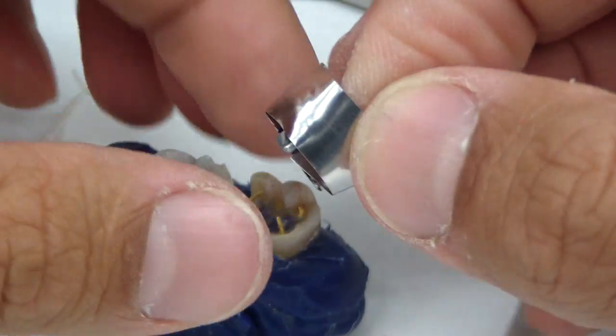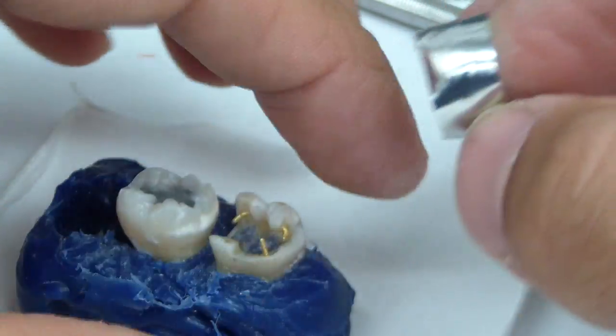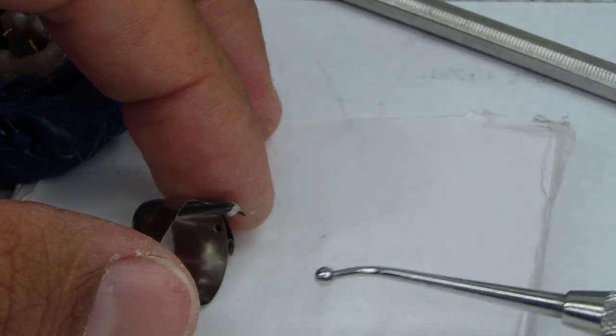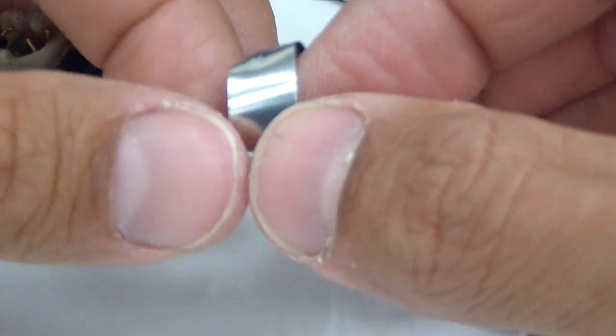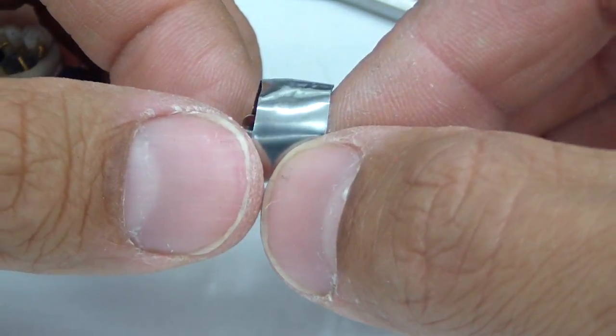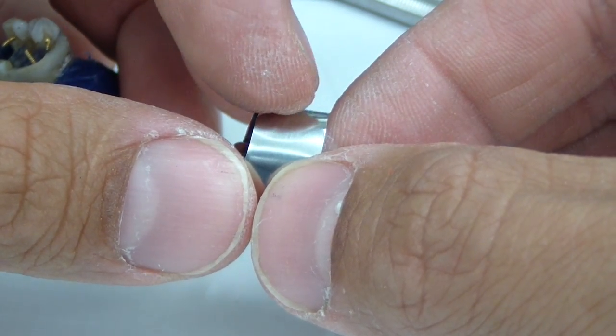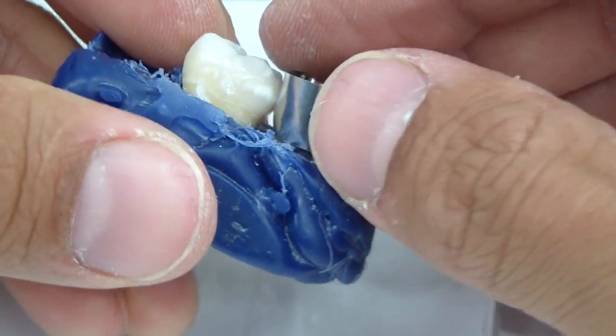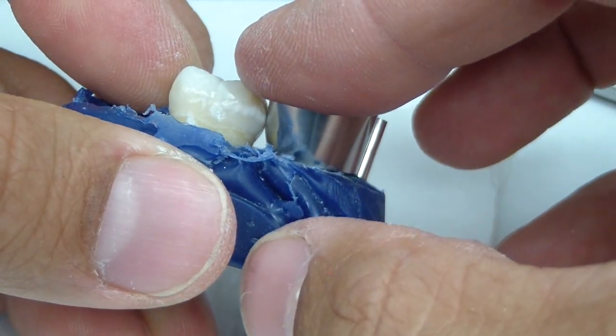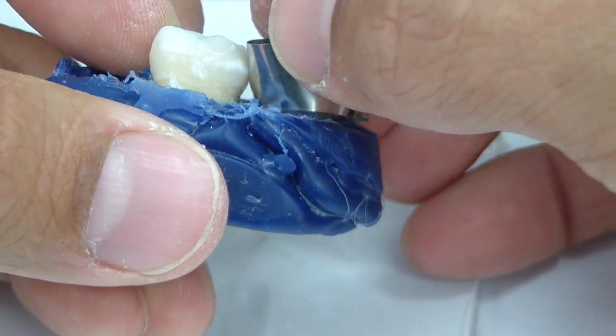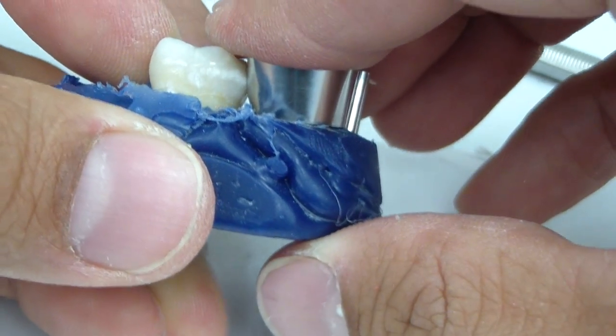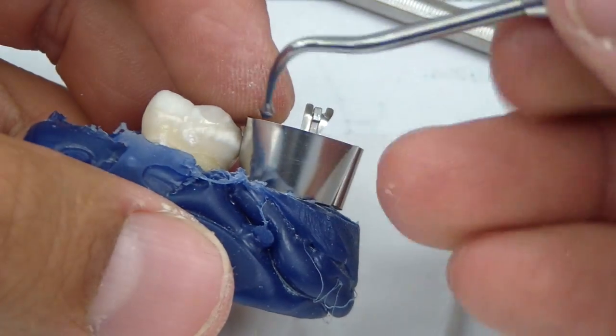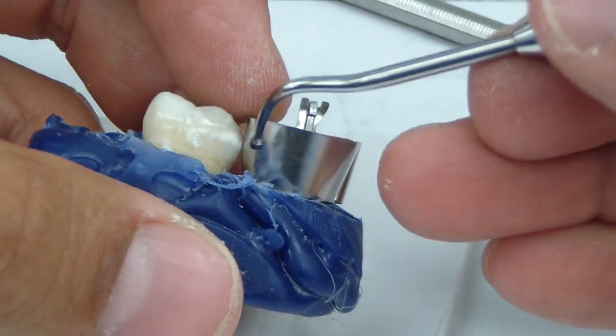So what I've done is I've burnished one of these matrices extraorally just on a 2x2 pad, or a mixing pad with a burnisher, whether it be an acorn burnisher or a ball burnisher. And you can see it's very subtle though, there's a change in contour. You can see it right there, that being the height of contour, right approximately there. So once we place this on the preparation, you can see now we have a little more of a contour and aiming for better gingival health and actually a contact area versus just a contact point.